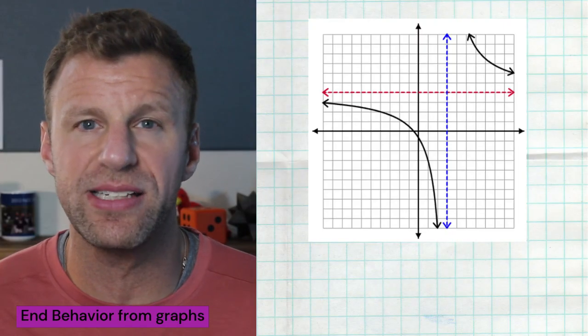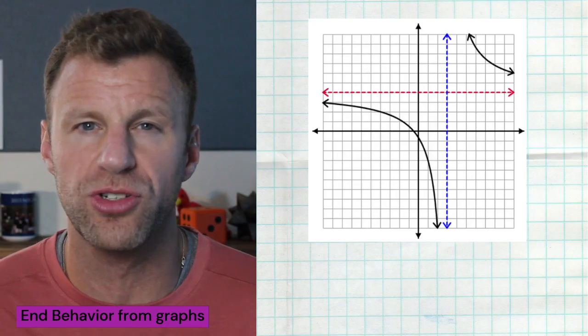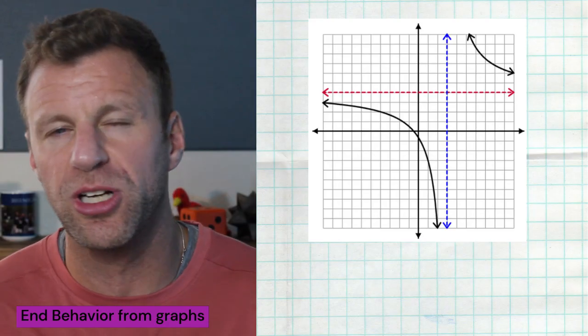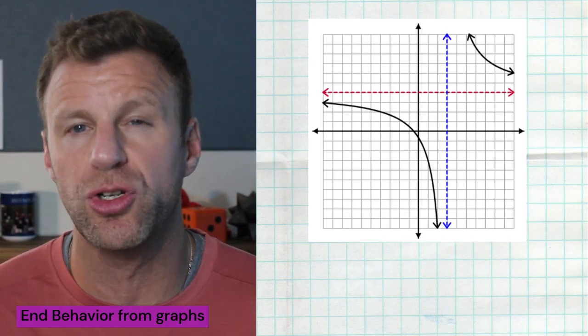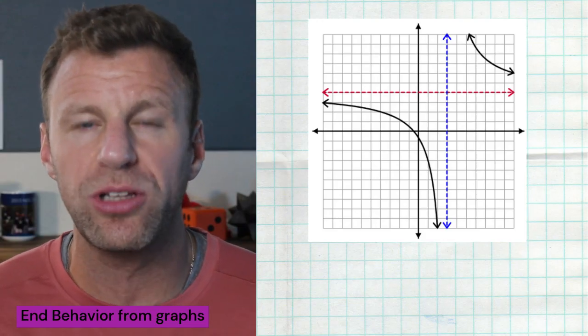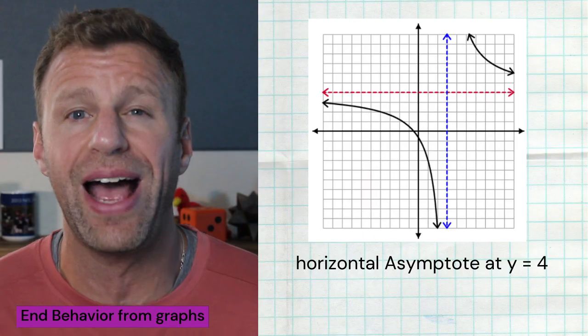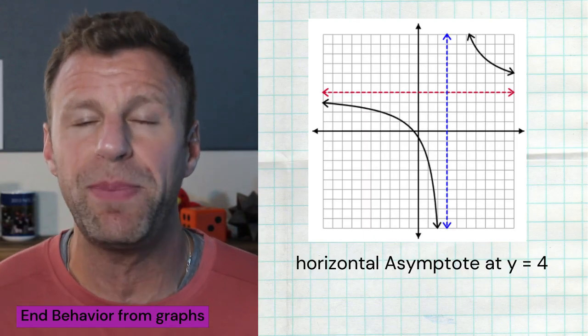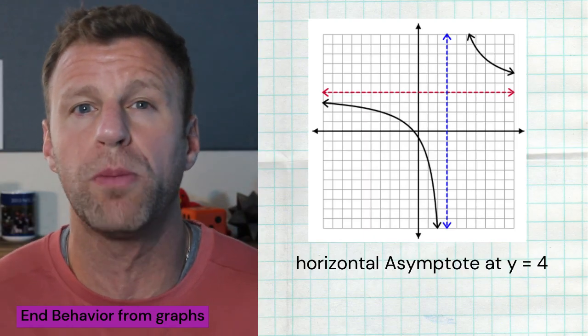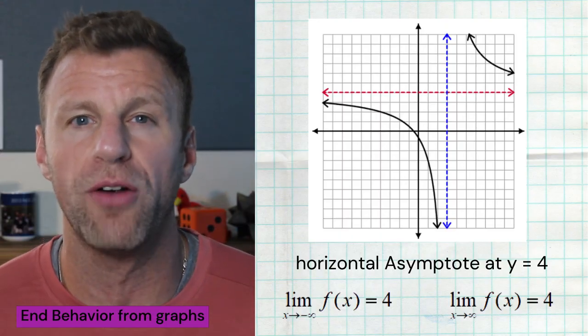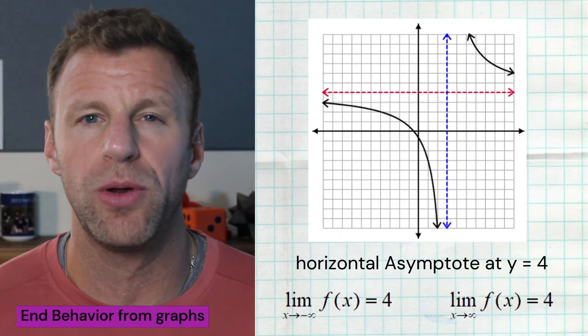Now, the last thing we need to be able to do is recognize all this happening in a graph. Here is a graph where we instantly see a vertical asymptote and a horizontal asymptote. We're concerned about that horizontal asymptote, and we clearly see it's at y equals four. When you have a horizontal asymptote, your end behaviors to the left and the right are going to approach that value — so both end behaviors are four. Remember those horizontal asymptotes like vacuums — they suck the function getting closer and closer to them.